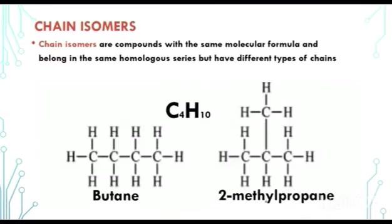What are chain isomers? Chain isomers are compounds with the same molecular formulae and belong in the same homologous series but have different types of chains. Let's look at an example between butane and 2-methylpropane.